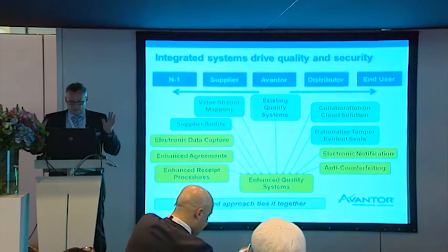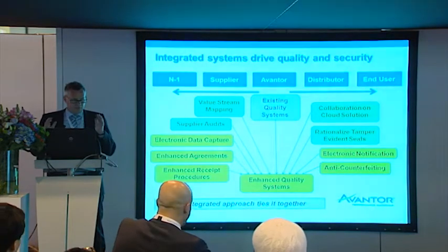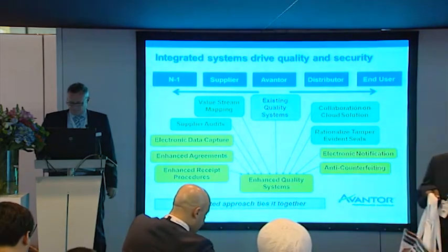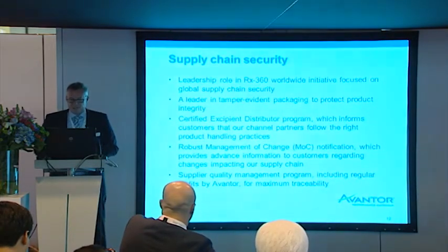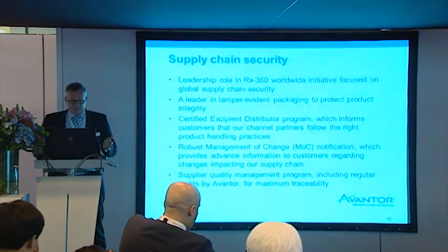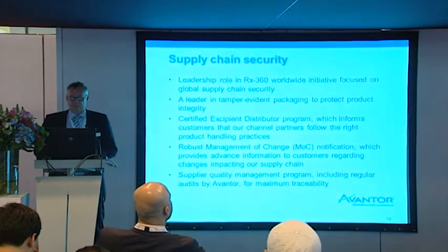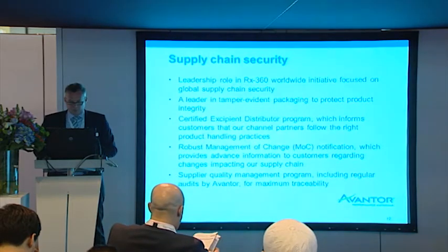Having control means understanding the process of purifying, subdividing, and quality control. In 2009, RX 390 was enacted in Pennsylvania. This is a very important worldwide initiative focused on global supply chain security, including certification of excipient distributor programs and a robust management of change — important whenever anything changes in your supply management.